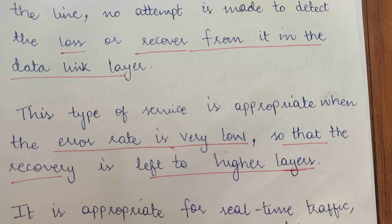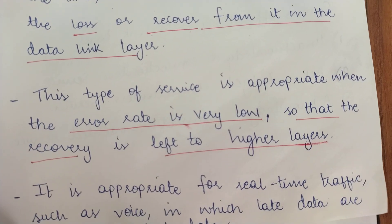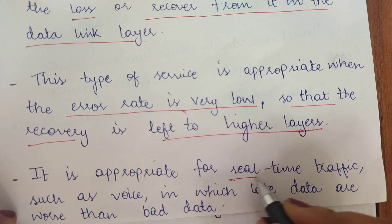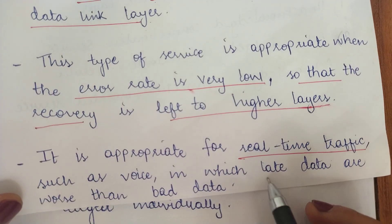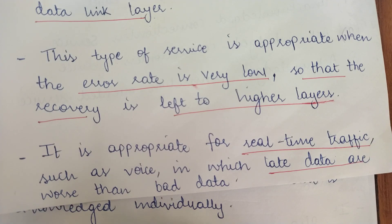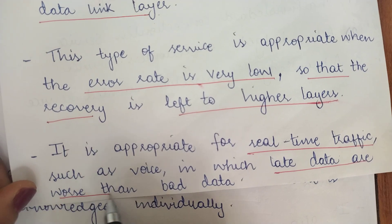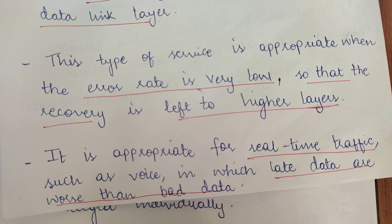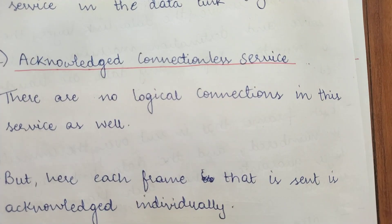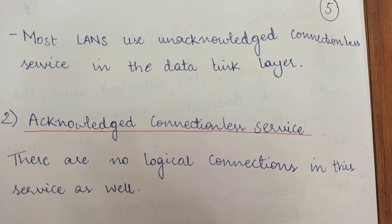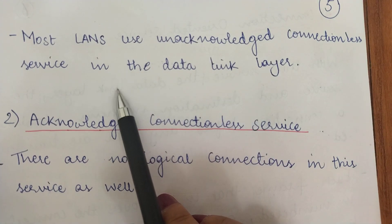When the error rate is low, you can choose the unacknowledged connectionless service of the data link layer. It is appropriate for real-time communication or real-time traffic, such as voice calling or video calling, wherein receiving data in real-time is more important than occasional bad data. Late data is a worse thing here than bad data — you can afford a little error in the data, but you cannot afford delay in the reception. In such real-time communications, the unacknowledged connectionless service is appropriate. Most LANs used nowadays use unacknowledged connectionless service in the data link layer.